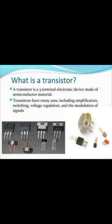In a transistor, we have two thick semiconductors with a thin semiconductor in between. This makes it a three-terminal device. It has many uses including amplification, voltage regulation, and modulation of signals. So the transistor is a device with two thick semiconductors insulated by one thin semiconductor.